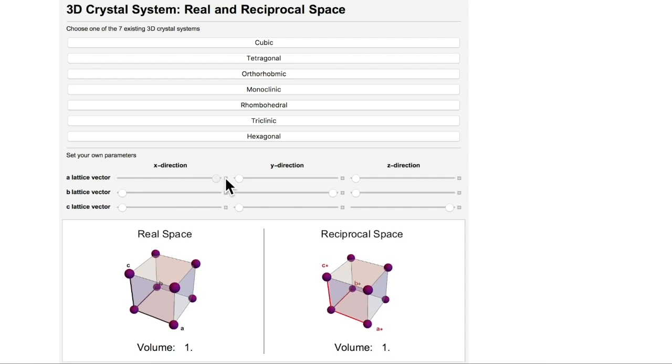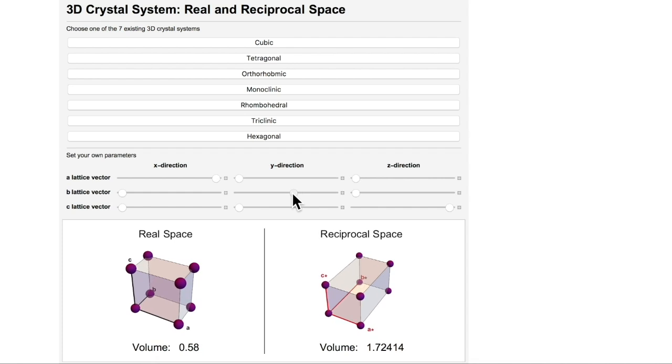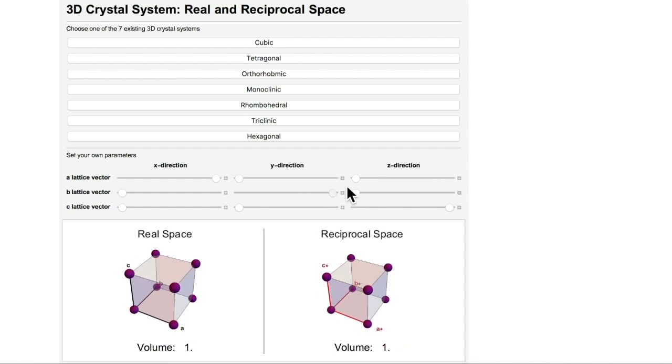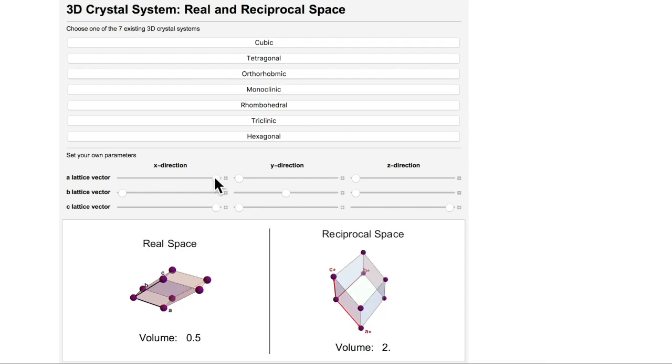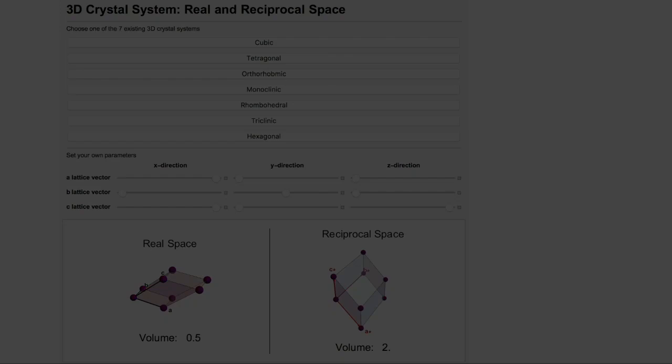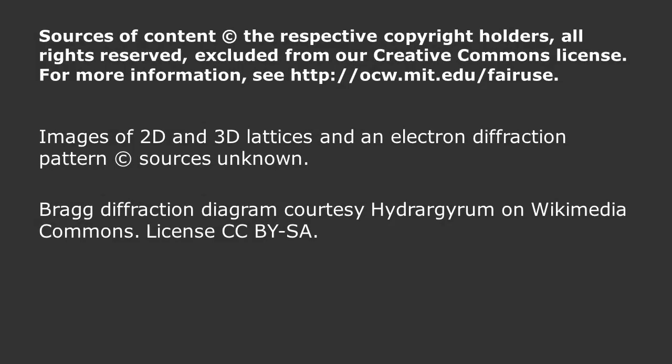For the simplest example, in cubic, if we shrink the unit cell in real space, it expands in reciprocal space. You can see this kind of behavior in any of the unit cells. Hopefully, this information helps you to visualize reciprocal space. Thank you.